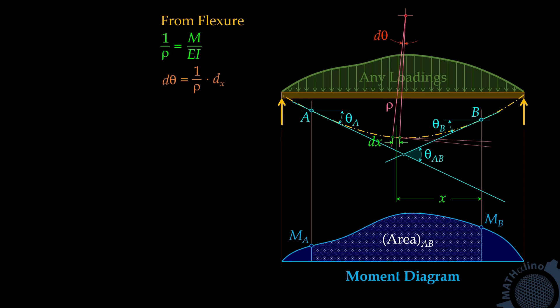The vertical distance between the tangent line and the elastic curve is called the deviation. From the figure, we have the deviation of point B from the tangent line through A, denoted by TBA. To find the length of deviation, let us take this differential element DT. Note that the central angle is also dtheta.